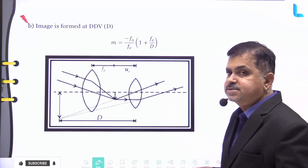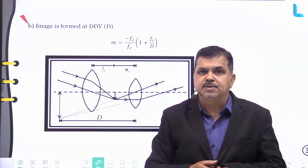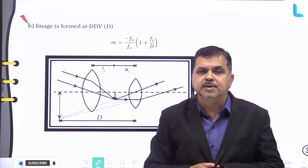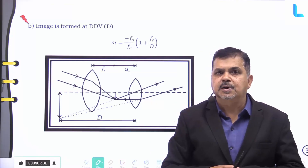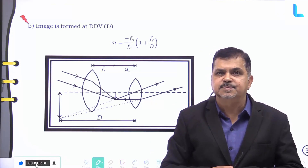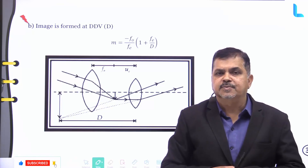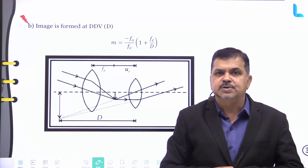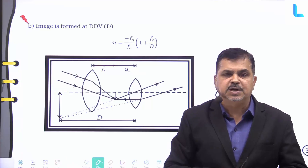This completes the last-minute revision on Chapter 9. We have covered different concepts, their graphs, image formation with respect to different types of lenses, and the reflection and refraction principles.